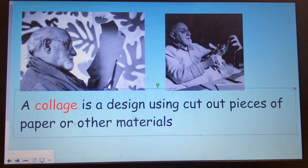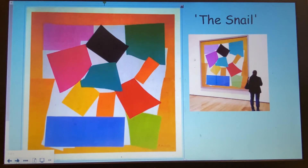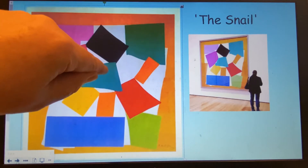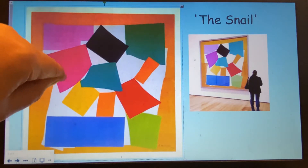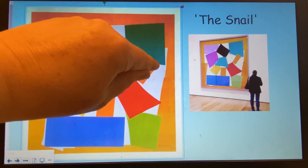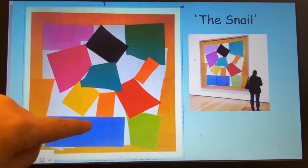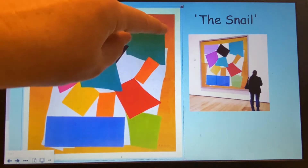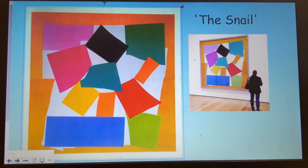He used to cut out pieces of paper and make very large works of art, which sometimes filled a whole wall. We're going to look at one of his famous collage pieces displayed in the Tate Modern in London. It's called 'The Snail.' If you look carefully, you can see the shape of a snail — you can see its shell going all the way around, its little head perking out, it crawling along the ground, and what looks like a piece of lettuce that it's eating.